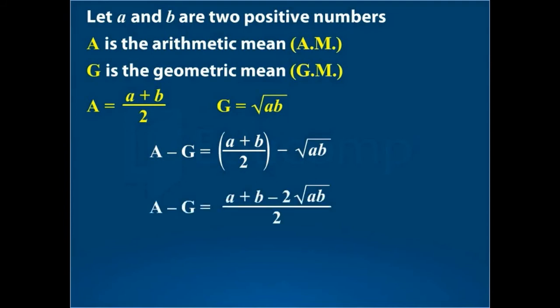This is further equal to within bracket square root of A minus square root of B whole square over 2. This is greater than or equal to zero.